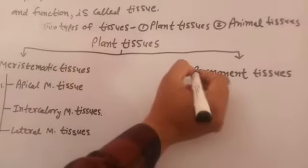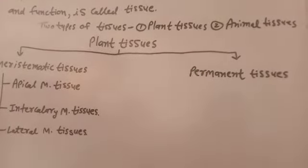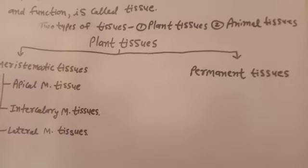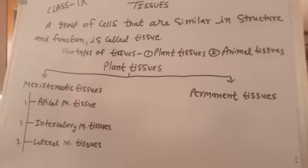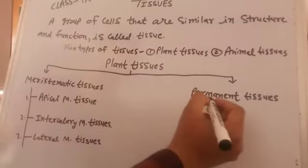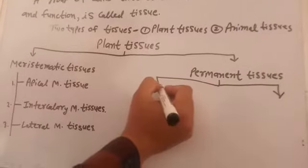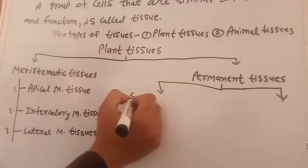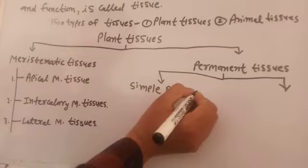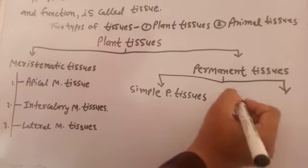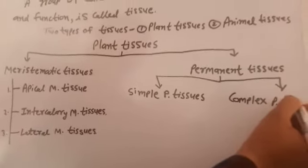Now, permanent tissues. Permanent tissues are derived from meristematic tissues and they lose their dividing property. Permanent tissues are divided into two types: first, simple permanent tissues, and second, complex permanent tissues.